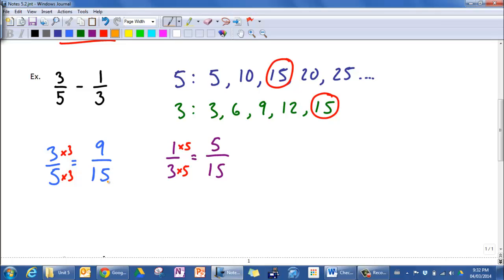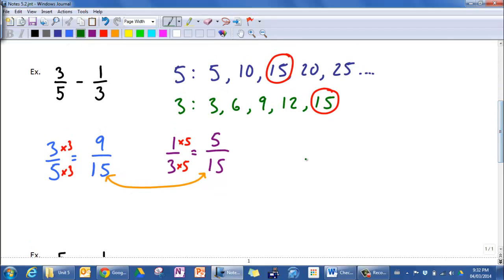Okay, now we can see that we've got our equivalent fractions, and we're dealing with the same denominator. So now it's going to be really easy for us to do our subtraction. Our last step is nine-fifteenths minus five-fifteenths, and nine minus five is four-fifteenths.